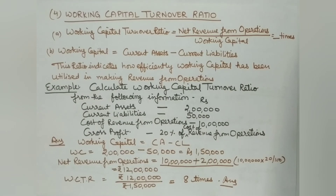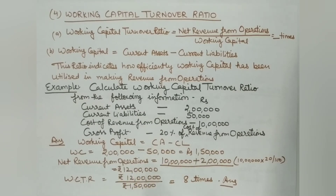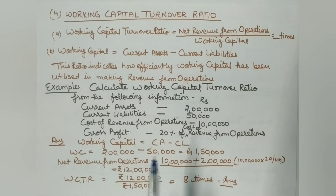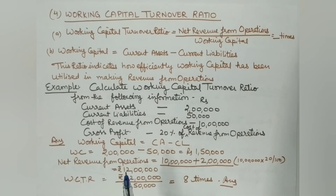So today we have discussed activity ratios — specifically inventory turnover ratio, trade receivable turnover ratio, trade payable turnover ratio, and working capital turnover ratio. These ratios help us understand whether our business is operating efficiently and assist in planning our cash management for daily activities. Thank you for watching — please do tell us how you liked today's video and don't forget to subscribe to this channel.